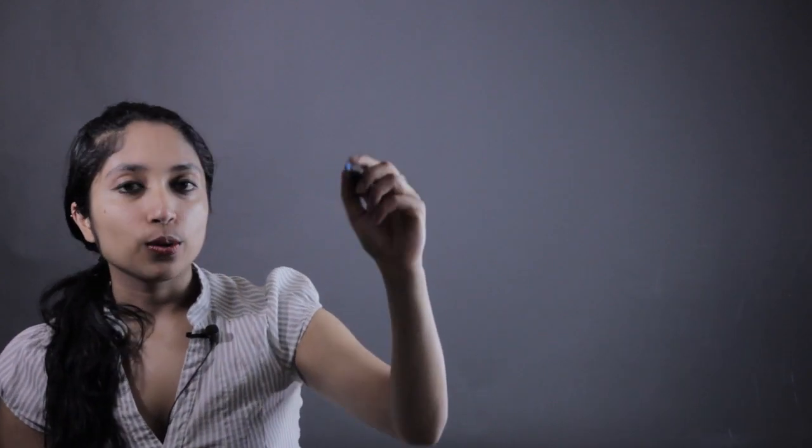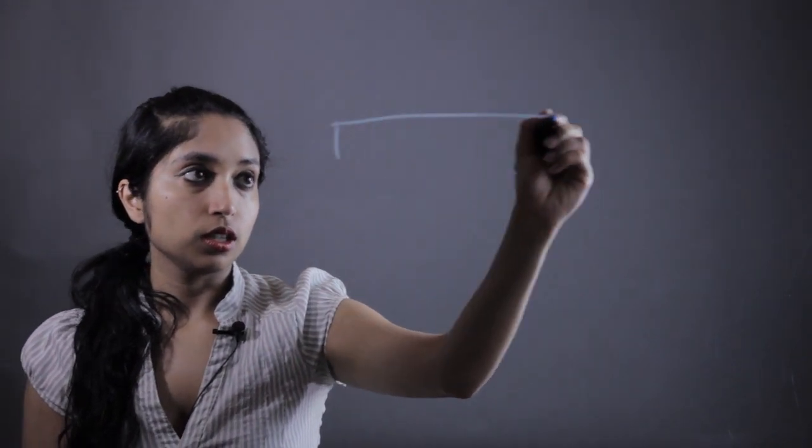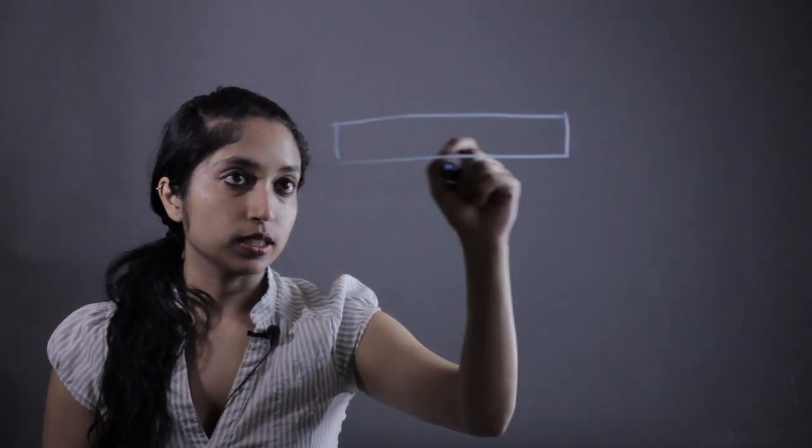And the key word there is visualize. So a good idea to do this is to take a fraction strip, which I'm going to draw for you right now. It's basically cut out of a piece of paper, divided into ten little pieces.